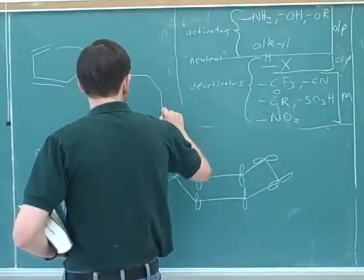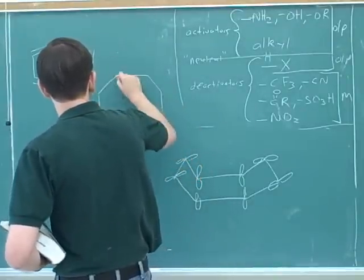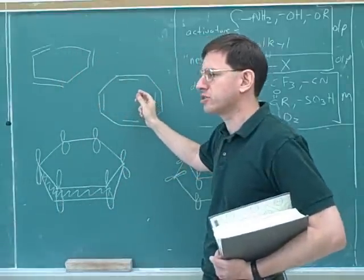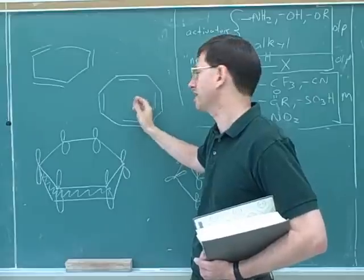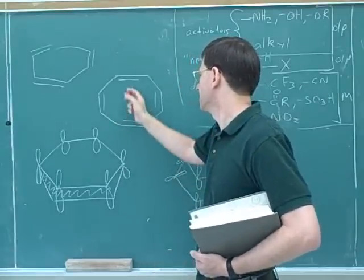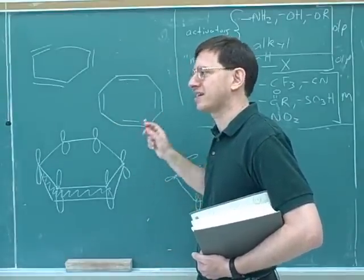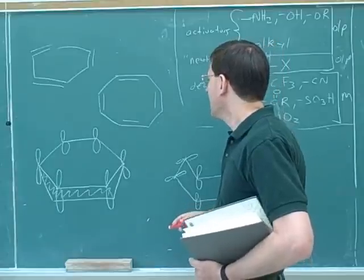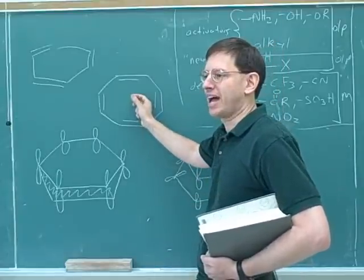How do you draw this? So this is cyclooctatetraene, a conjugated one. Cyclooctatetraene. That's right, cyclooctatetraene. Anyway, this turns out not to be flat.